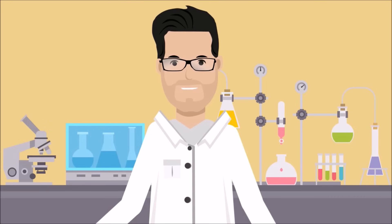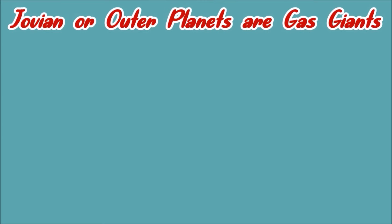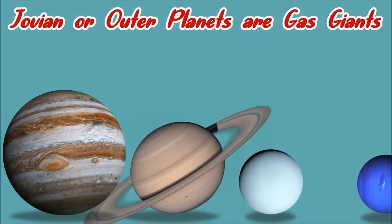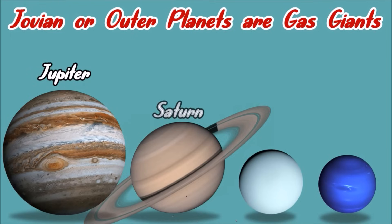Let's talk about the outer planets. These planets are known as gas giants. These are Jupiter, Saturn, Uranus, and Neptune.